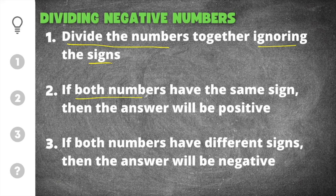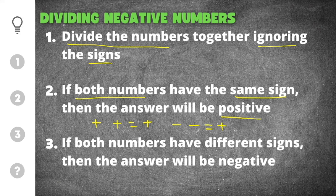Then you're going to look and see if both numbers have the same sign — the answer will be positive. If you have a positive divided by a positive, your answer will be positive. Or if you have a negative divided by a negative, your answer will also be positive. This is because the two negatives cancel and make a positive number as your answer.